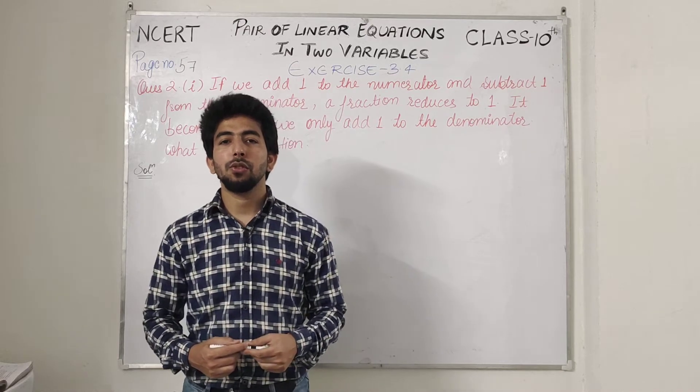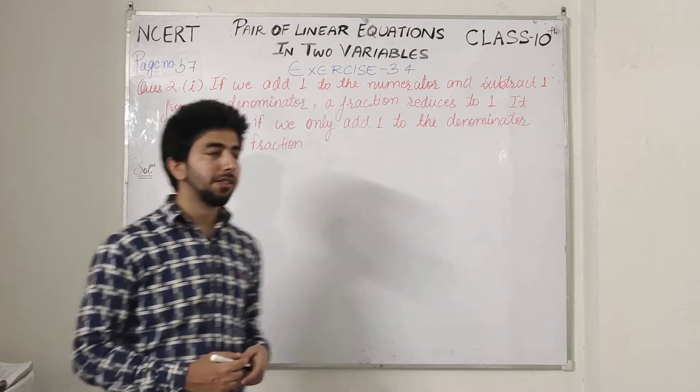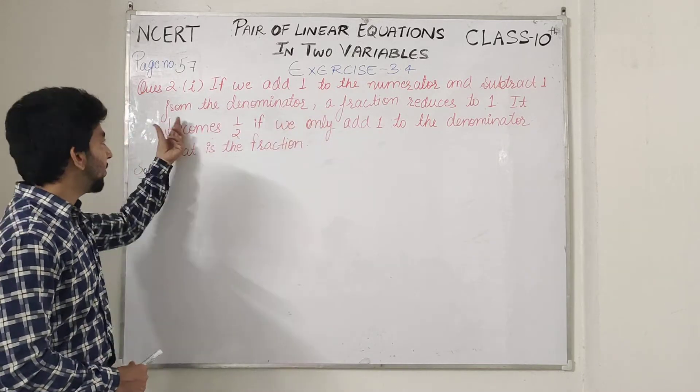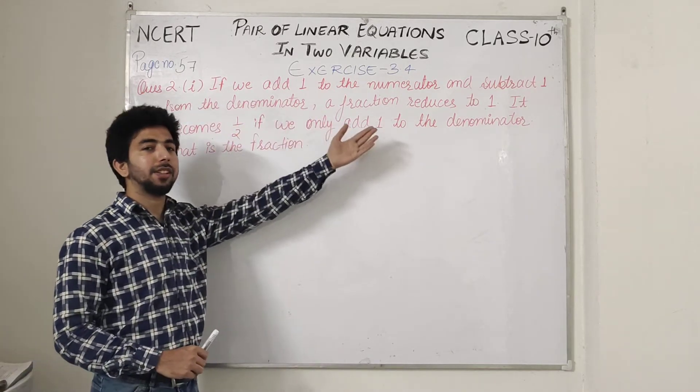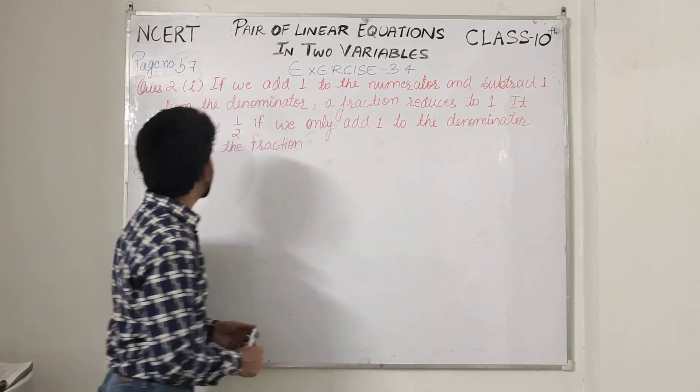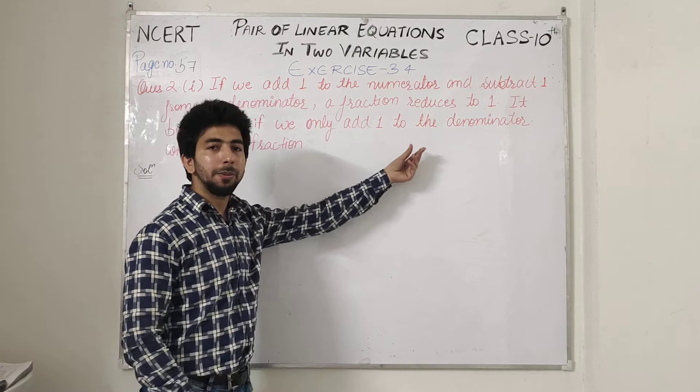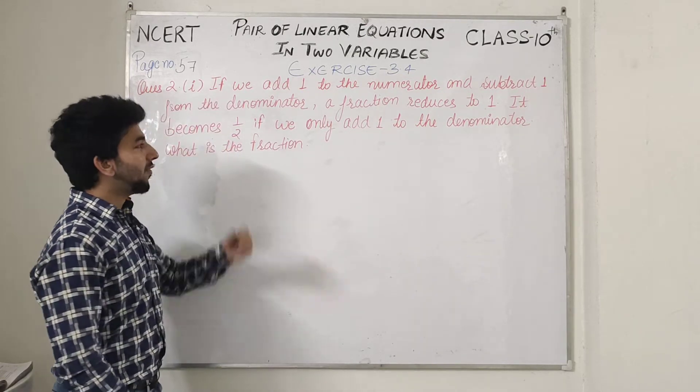Friends, this is exercise 3.4, question number 2 part 1. If we add 1 to the numerator and subtract 1 from the denominator, a fraction reduces to 1. It becomes half if we only add 1 to the denominator. What is the fraction?